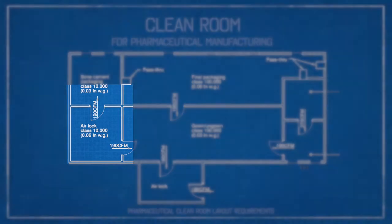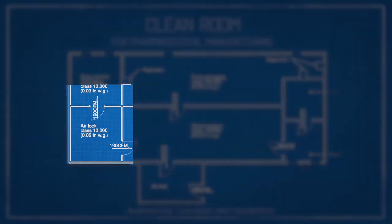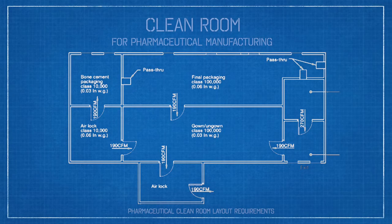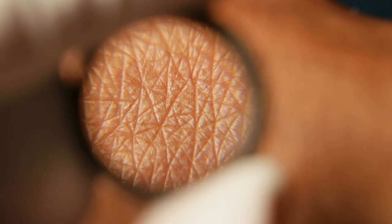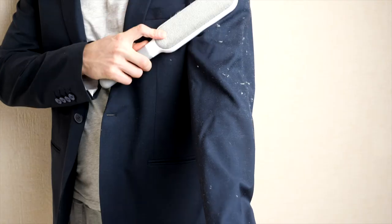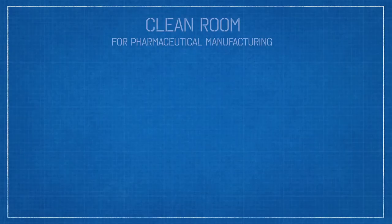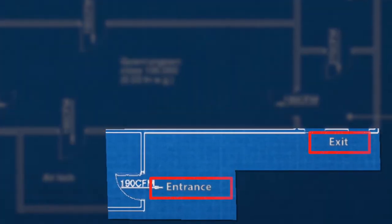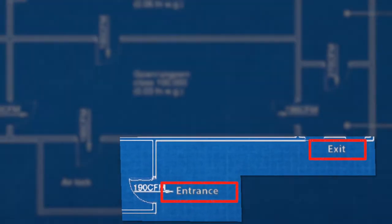Airlocks and transition rooms are used to create buffer zones along the different levels of cleanliness as people enter into the clean room area. This process will help prevent dirt and debris found on skin and clothing from being carried into the room. Entrance and exit routes are also required to be separate to prevent cross-contamination.